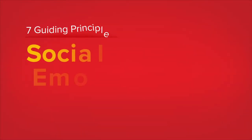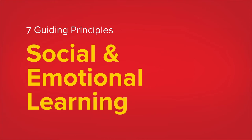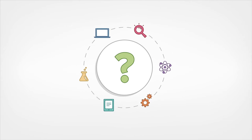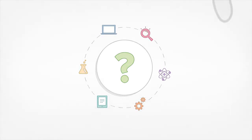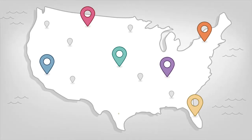The seven guiding principles of social and emotional learning from the applied learning scientists at McGraw-Hill. How can we build social and emotional learning into the school day? Our learning scientists set out to find the answers and develop seven principles.